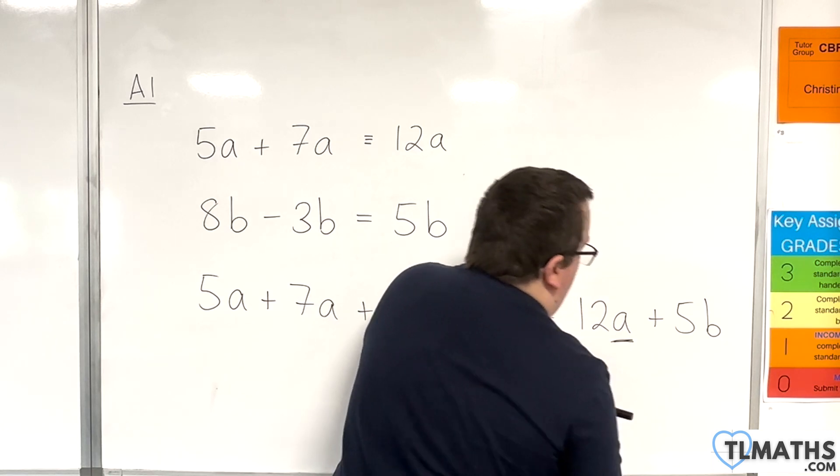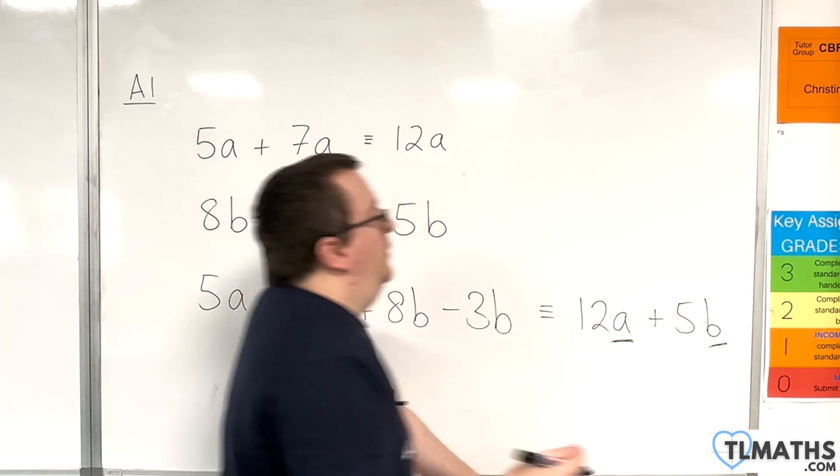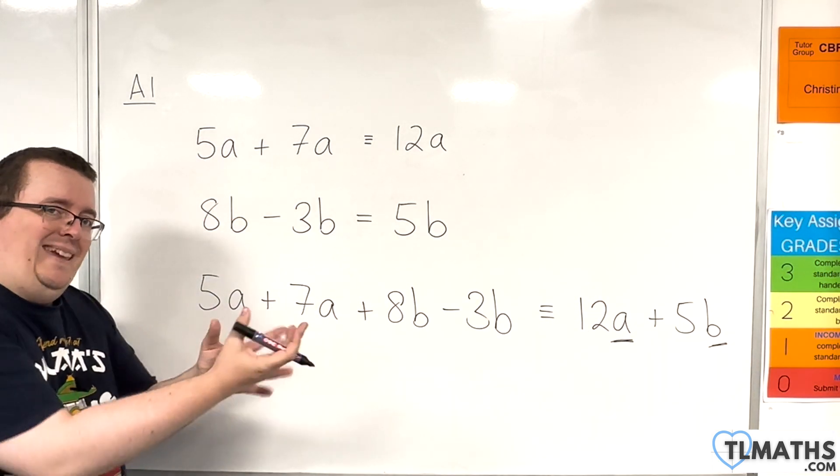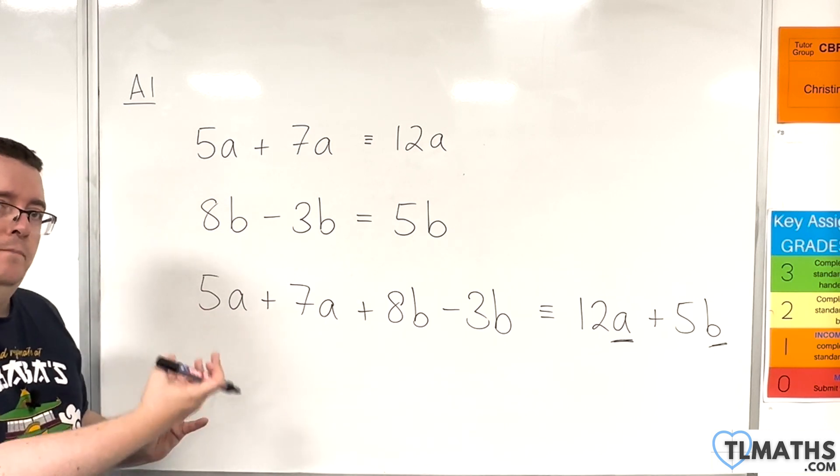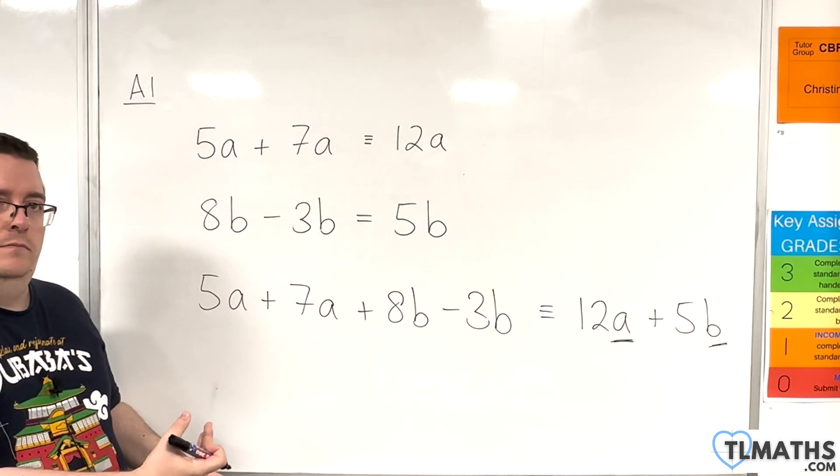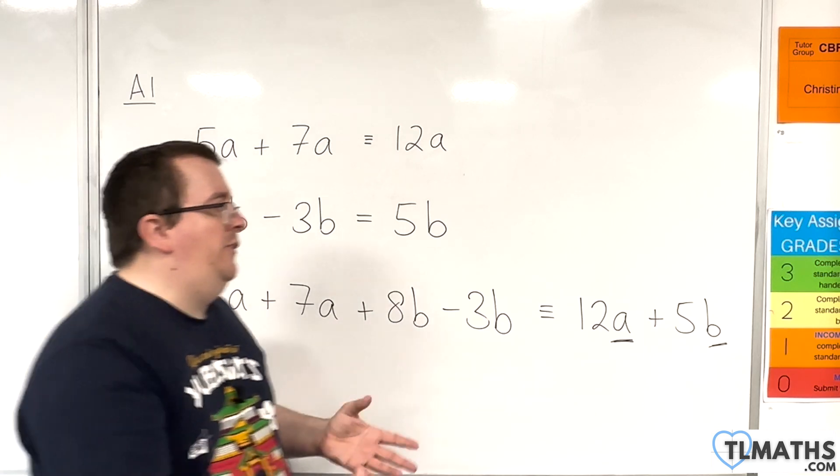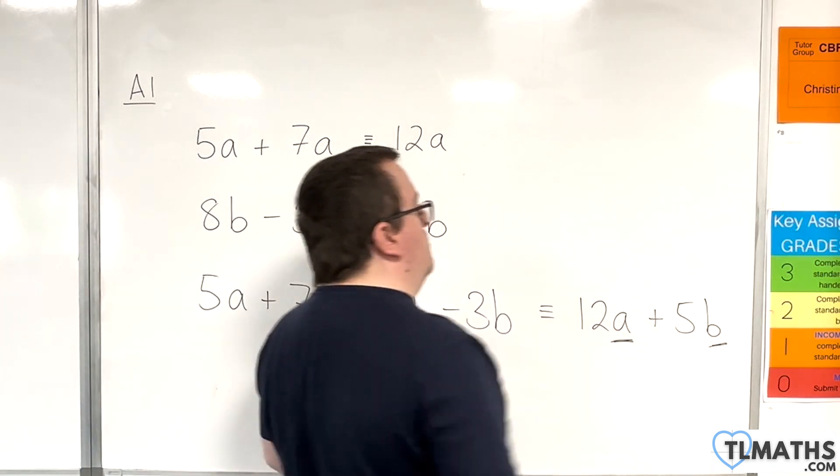So these are two different objects, if you like, two different terms. This one has A, this one has B, so because they are different, I cannot combine them into one term. Okay, and this is the finished form of how I must write it.